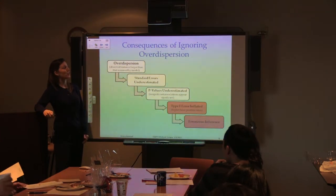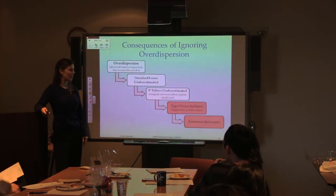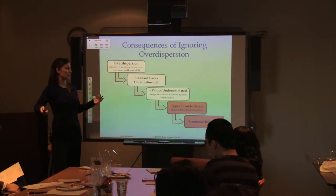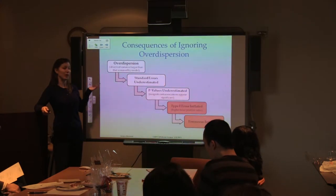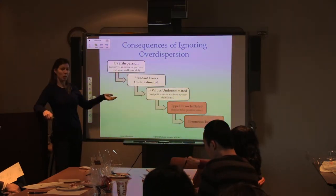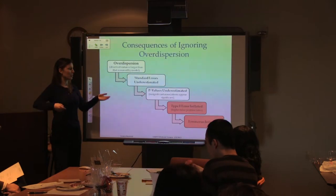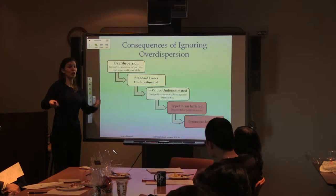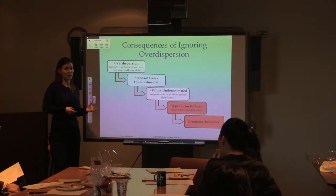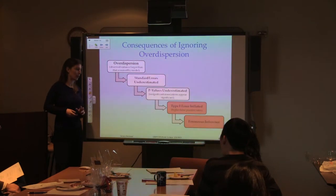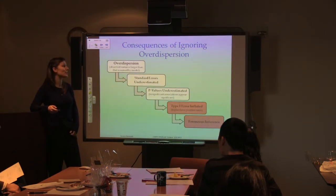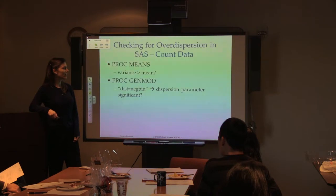If you ignore over-dispersion in your data analysis and run a regression without accounting for it, your standard errors will be underestimated, which means your p-values will also be underestimated. You may see associations that aren't really there — they'll look significant. Your type 1 error will be inflated above the nominal value of 0.05, leading to higher false positive rates and erroneous inferences.